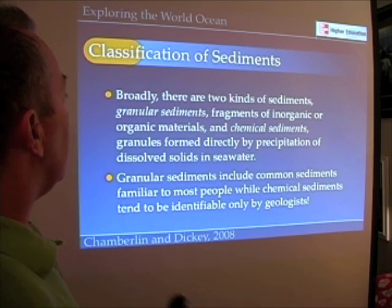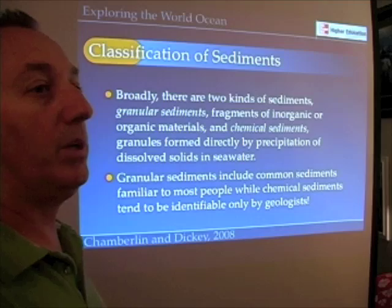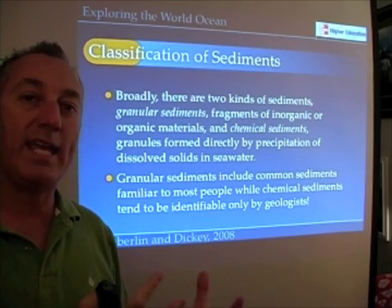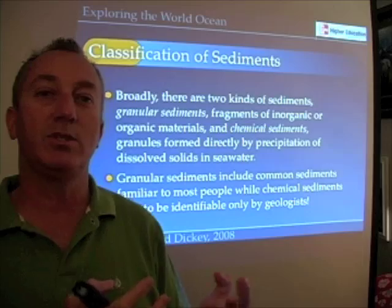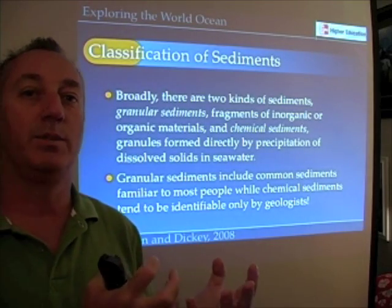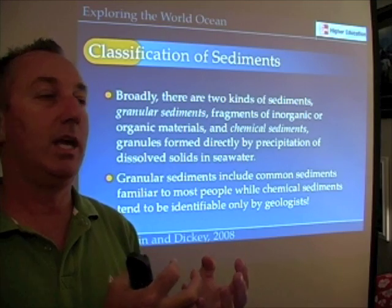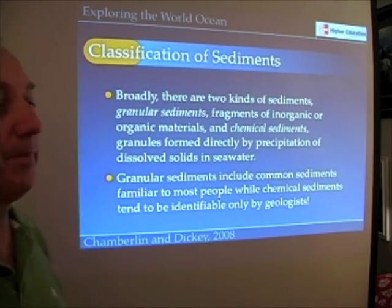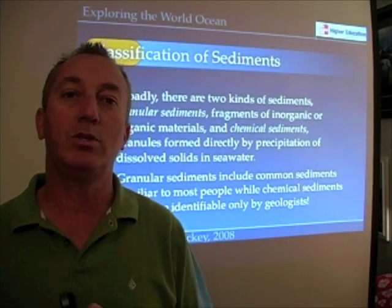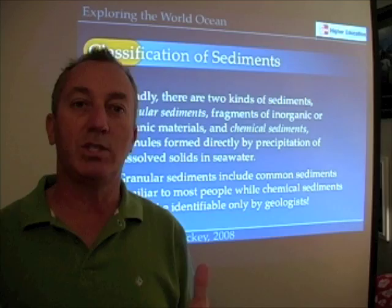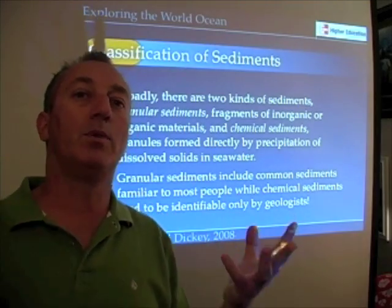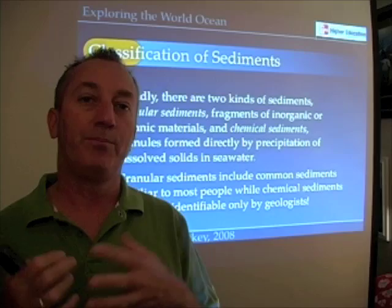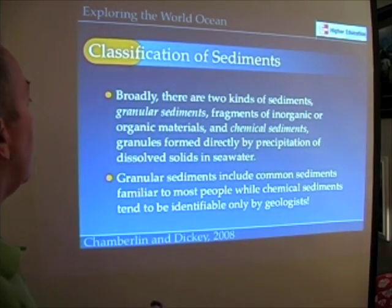The first thing we try to figure out is what are the basic classes of sediments. We have what are called granular sediments — just pieces of rock, pieces of biological material, pieces of shell — fragments of inorganic or organic materials. And then we have chemical sediments, which are derived from some precipitation process, either evaporation of seawater or precipitation of minerals in a hydrothermal vent. So two types of sediments broadly: granular sediments and chemical sediments.